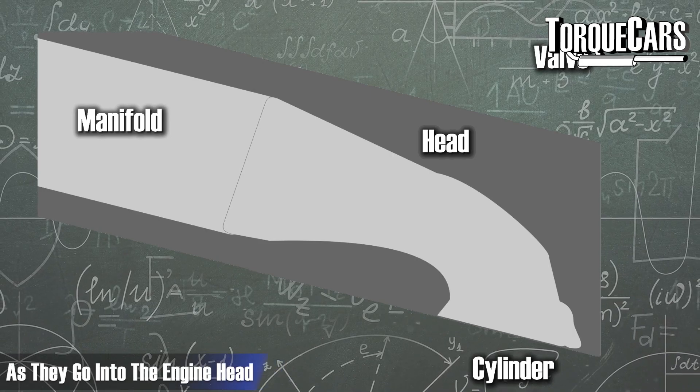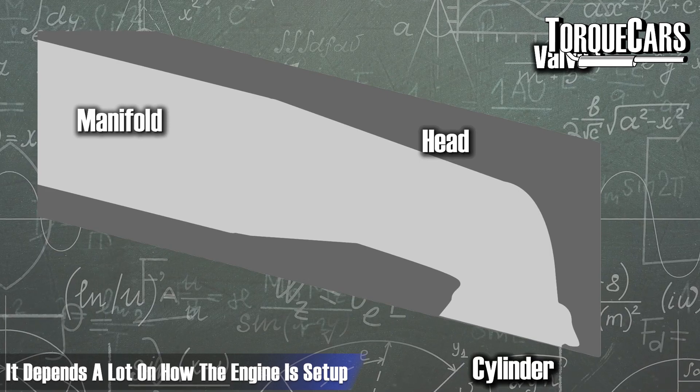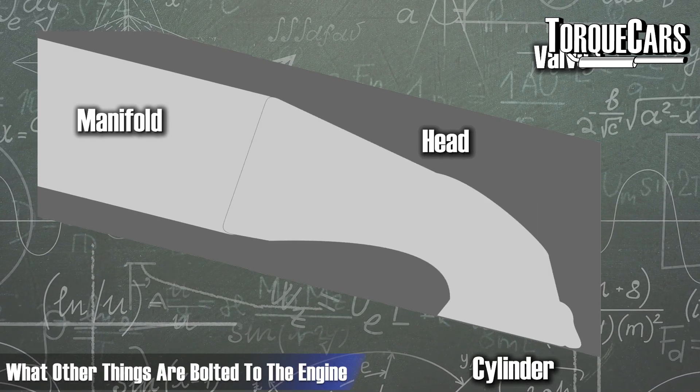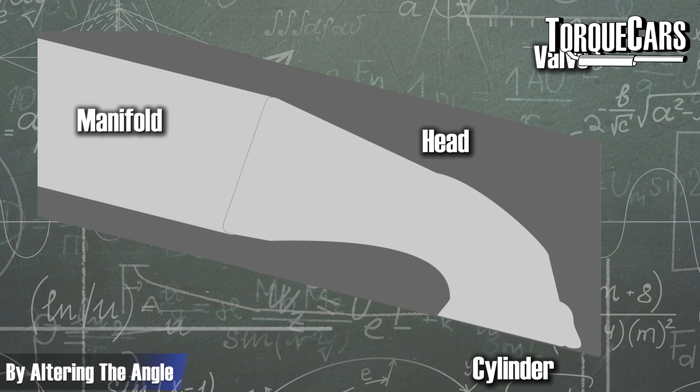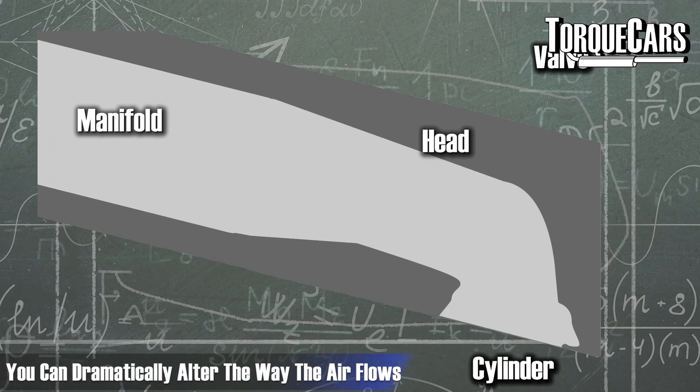Another more complex task involved in the world of cylinder head tuning is actually changing the angle of the channels as they go into the engine head itself. It depends a lot on how the engine is set up and where the existing pipework is and what other things are bolted onto the engine. But by altering the angle that the ports take into the cylinder and into the valves, you can dramatically alter the way that air is flowing into the engine for the better.